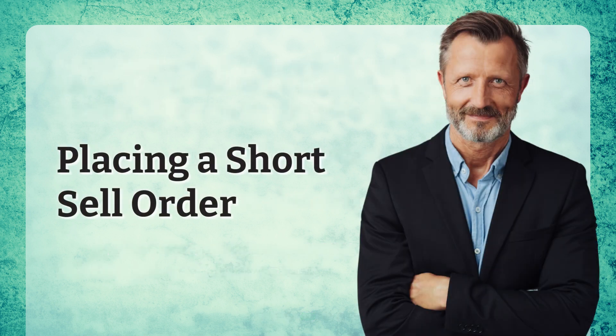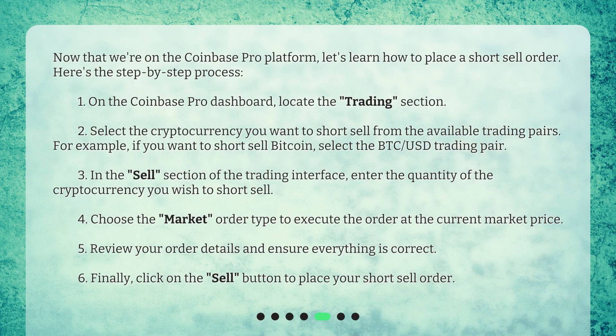Now that we're on the Coinbase Pro platform, let's learn how to place a short sell order. Here's the step-by-step process: one, on the Coinbase Pro dashboard, locate the trading section; two, select the cryptocurrency you want to short sell from the available trading pairs.